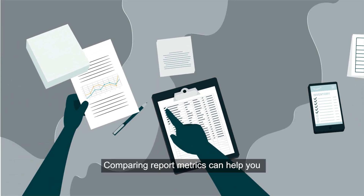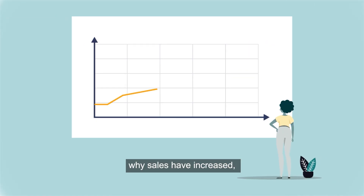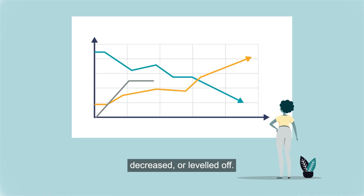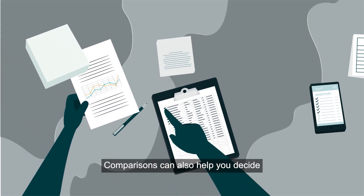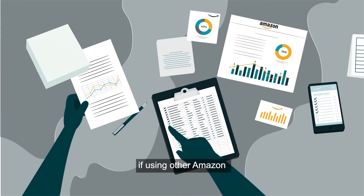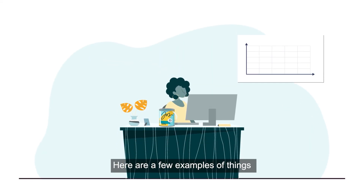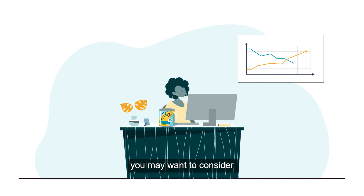Comparing report metrics can help you determine the reasons why sales have increased, decreased, or leveled off. Comparisons can also help you decide if using other Amazon selling tools may help your sales. Here are a few examples of things you may want to consider when there are changes in business report data.